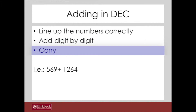And if you end up with a sum that is bigger than 10, you are going to record a so-called carry, which basically tells you that you now have to move some digits into the next place value.